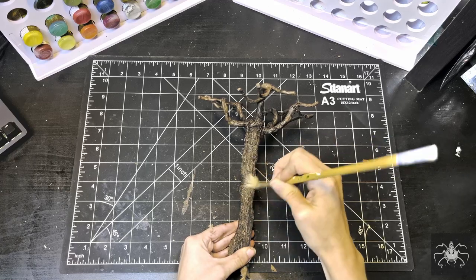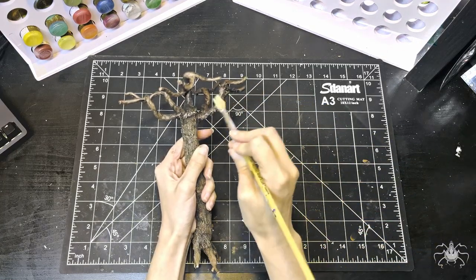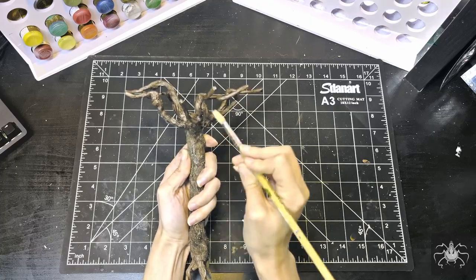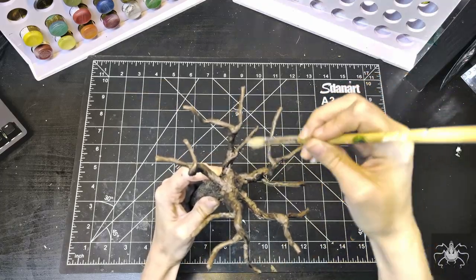Then, with the dry brushing technique, I'm just lightly brushing, essentially dried paint, over the textured bark, to create some lift and highlights.